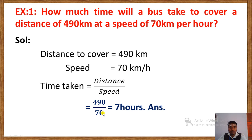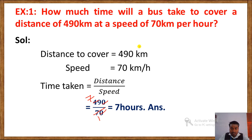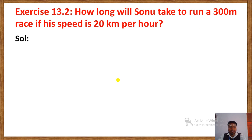Time taken equals distance divided by speed: 490 kilometres divided by 70 kilometres per hour. Cancelling the zeros and dividing, 49 divided by 7 gives 7. So the answer is 7 hours. Since both distance and speed are in kilometres, no unit conversion is needed — simply use the values and divide.